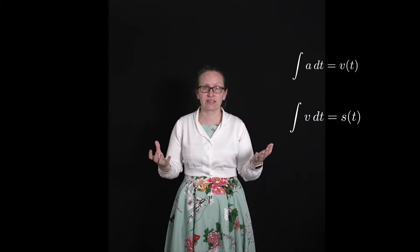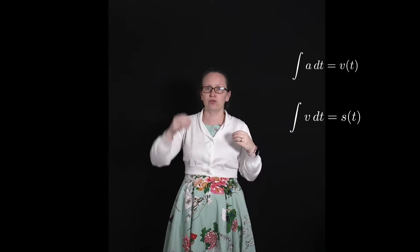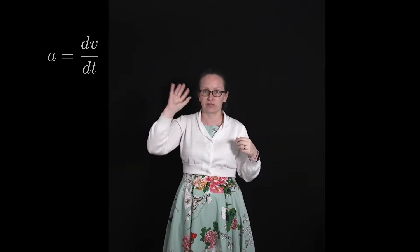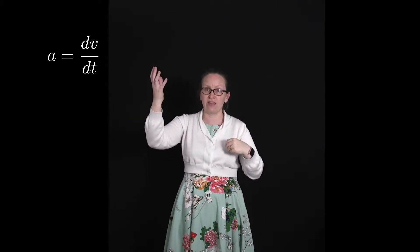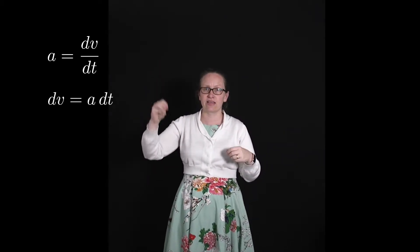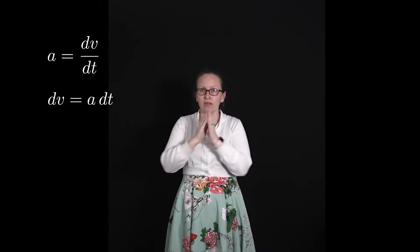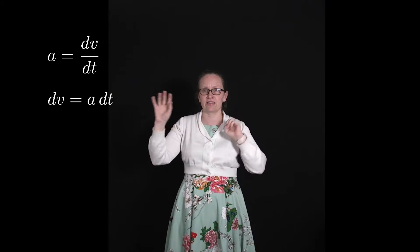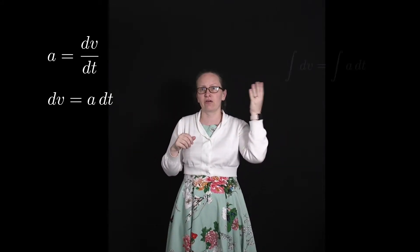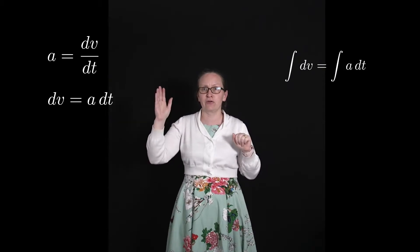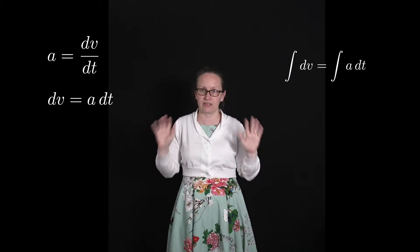Let's consider how this works. The acceleration is equal to dv/dt, the derivative of the velocity. We can rearrange this equation to get dv, the change in the velocity, is equal to the acceleration times dt. To get rid of the dv and dt, we're going to need to integrate. So we can write the integral of dv is equal to the integral of a dt, and it's useful to include our constants of integration.